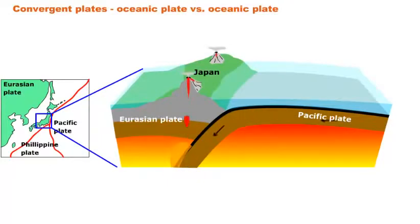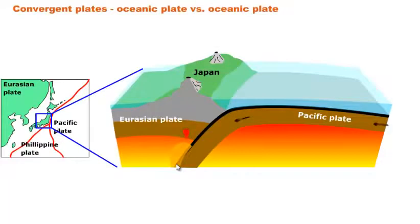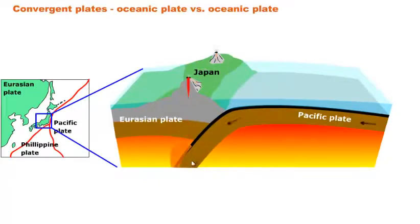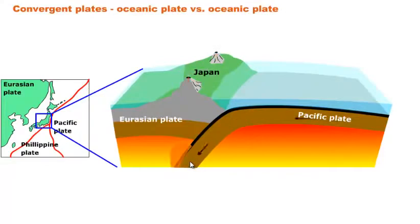Much of the rock from the subducting Pacific plate melts into magma, pushes its way up to the surface, and becomes volcanoes. By this mechanism, volcanic islands are continuously being built up around these subduction zones. In geology, such islands are referred to as island arcs because there's a curve or arc to the island that mimics the plate boundary. Thus, Japan is actually an island arc.